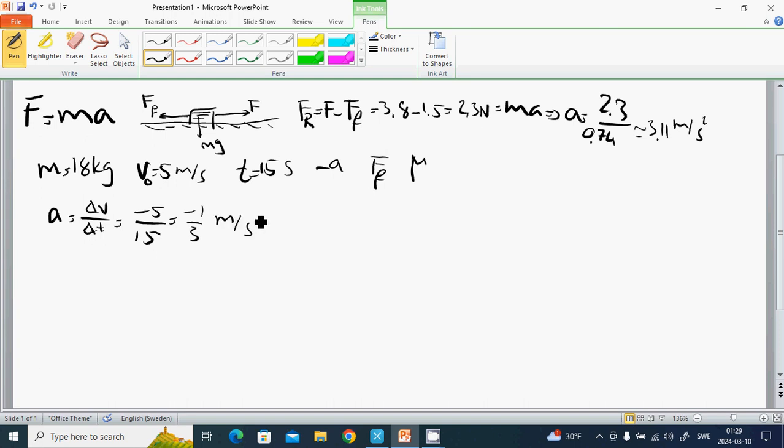Meters per second squared. And then friction force FF equals 18 multiplied by 1 divided by 3 minus, it is minus 6 newtons. And mu equals minus 6 newtons. Mu equals F divided by Mg, which is minus 6 divided by 18 multiplied by 9.82. It is 0.034.